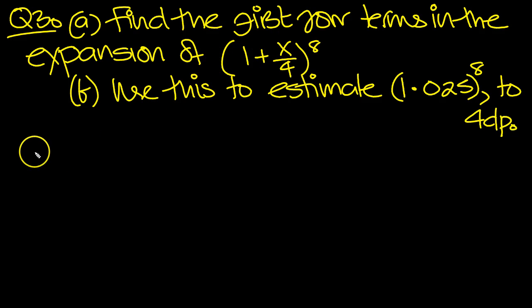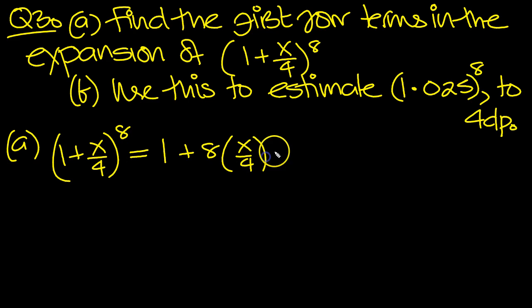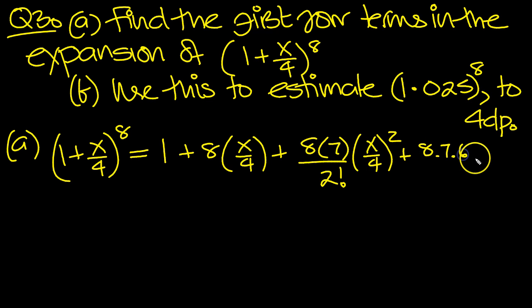So first four terms in this expansion. So part a, 1 plus x over 4 to the power 8. Let's write down the binomial expansion then. It's 1 plus n, which is 8, times x, which in this case is x over 4, plus n times n minus 1 times x squared over 2 factorial, plus n times n minus 1 times n minus 2 times x cubed over 3 factorial. There's 1, 2, 3, 4 terms. Plus and it carries on, doesn't it?